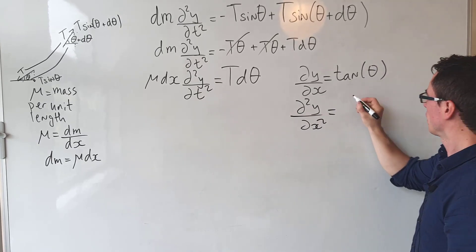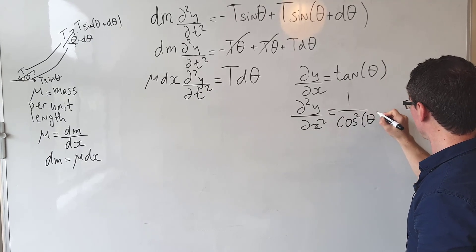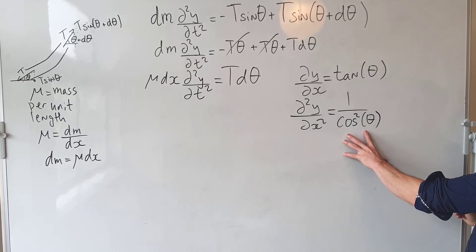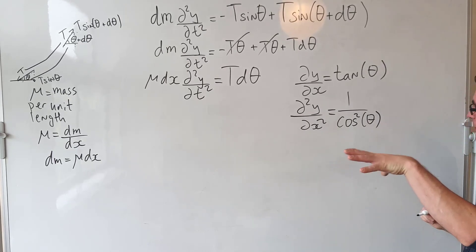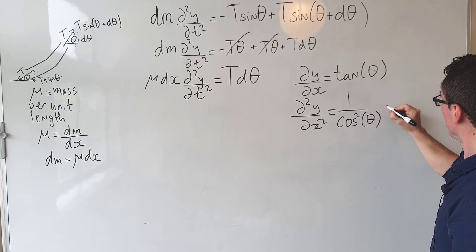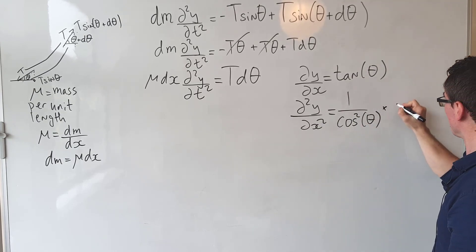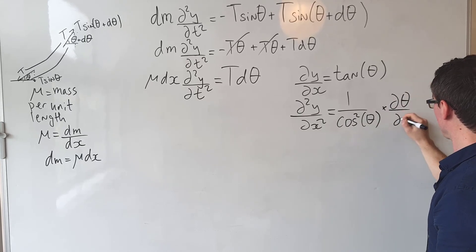But then we're not quite done because the angle depends on the displacement. Therefore we need to use the chain rule, so we're going to multiply by the derivative of theta, which is just d theta/dx.